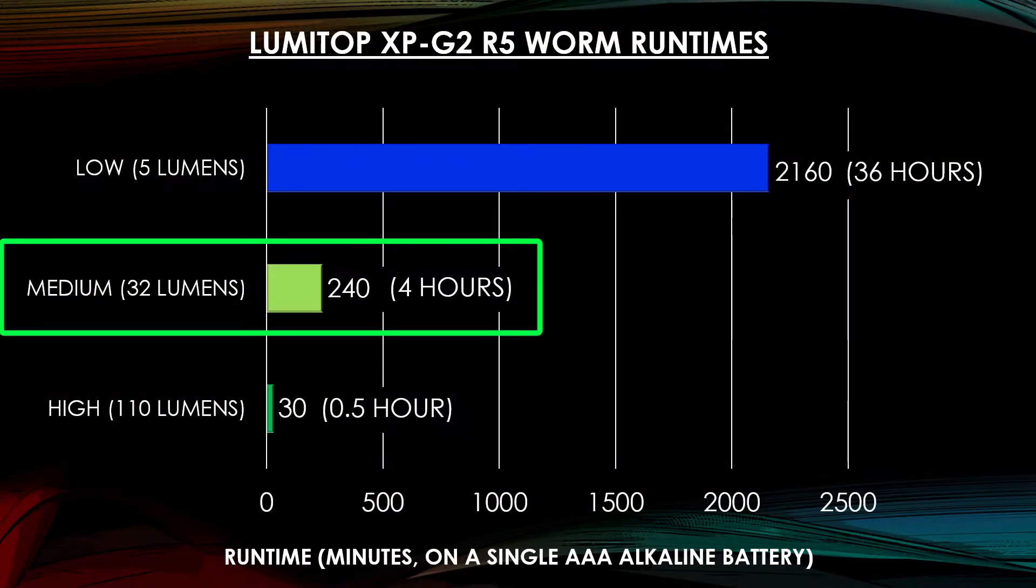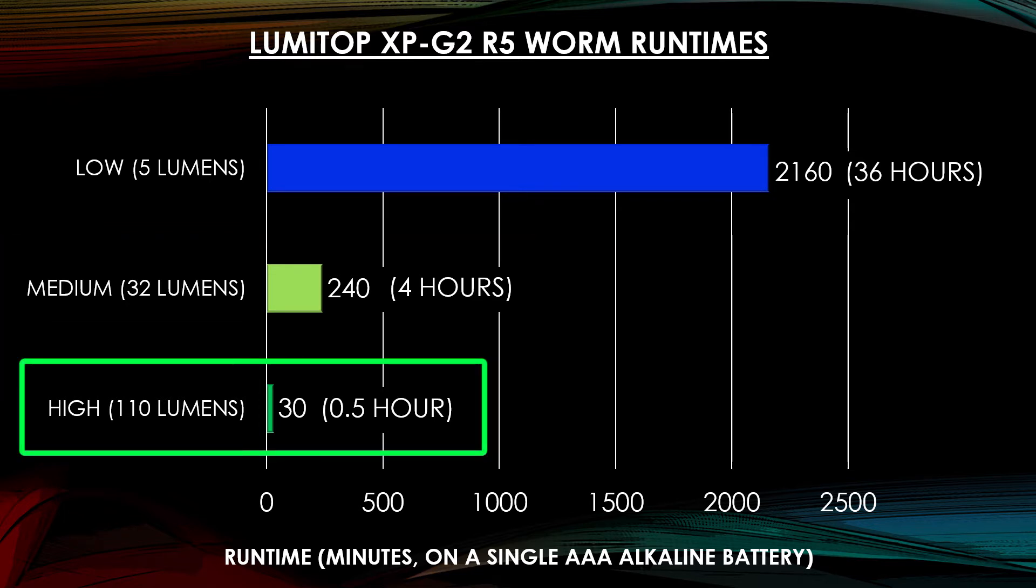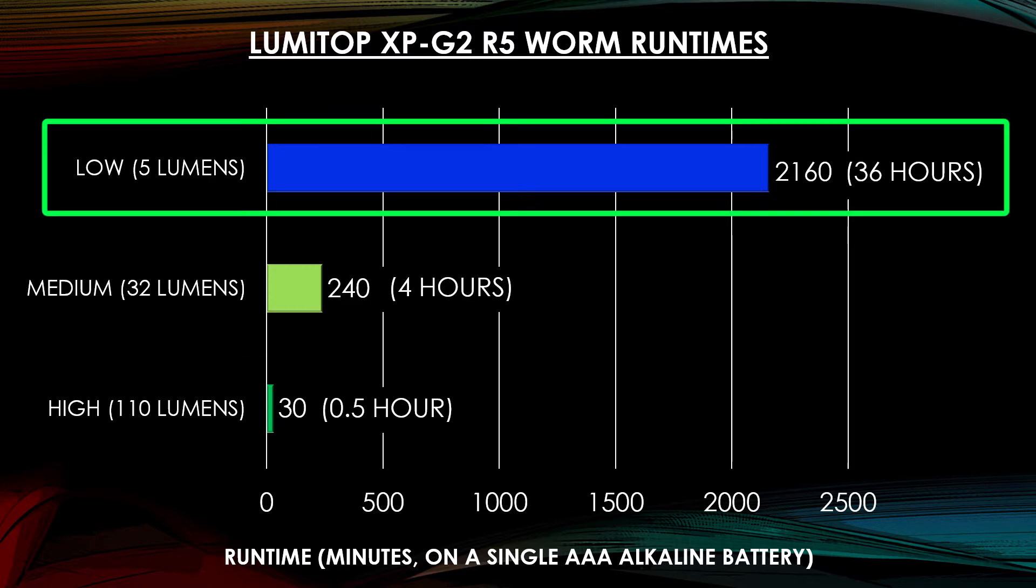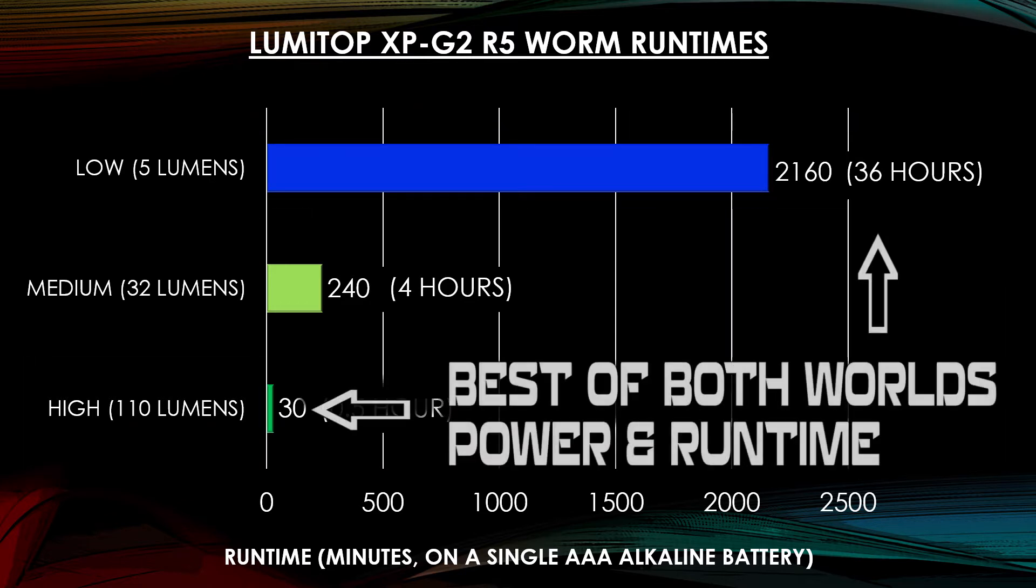Medium gives you 32 lumens and 4 hours of run time. High gives you 110 lumens and 30 minutes. Low gives you 5 lumens and 36 hours of run time. So this flashlight is good if you need a lot of power or if you need a lot of run time.